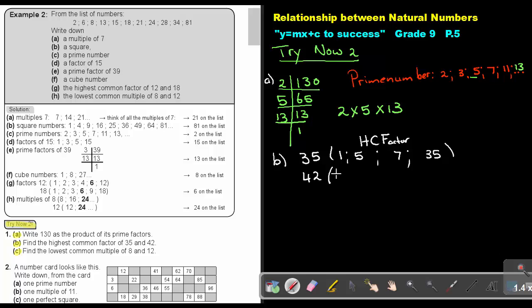And 42. Start with 1 and 42. 2 can go, there's an even number at the end, giving 21. Can 3 go? 4 plus 2 is 6, so yes, 3 can. 42 divided by 3 is 14. Can 4 go? No. Can 6 go? Yes, 6 goes in 7 times.